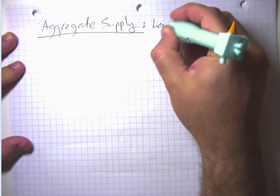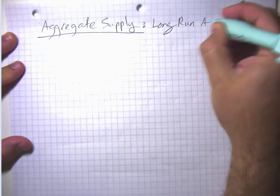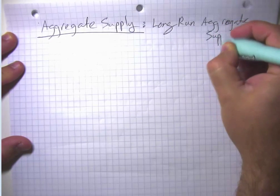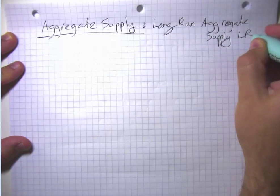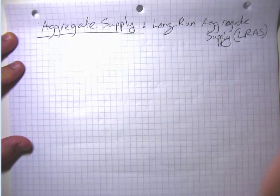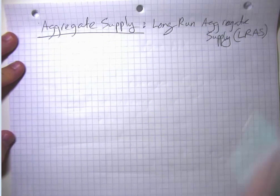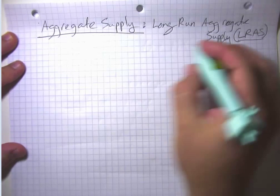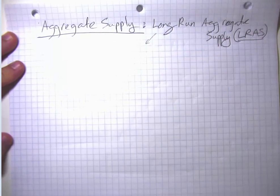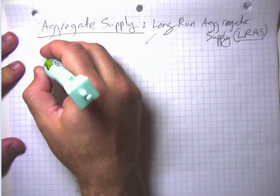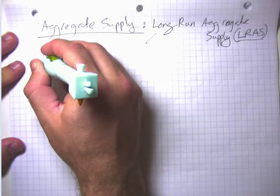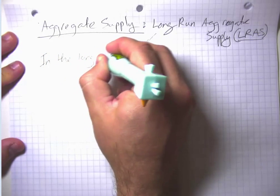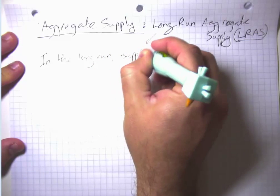What we're going to talk about first is the long run aggregate supply curve — I'm going to often abbreviate it LRAS. The idea of long run aggregate supply is to bring in some of those insights of the classical economists: that in the long run, supply is constrained by the factors of production.